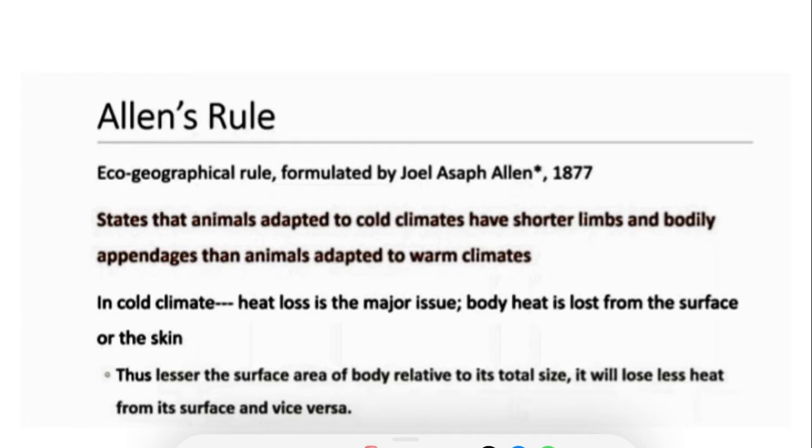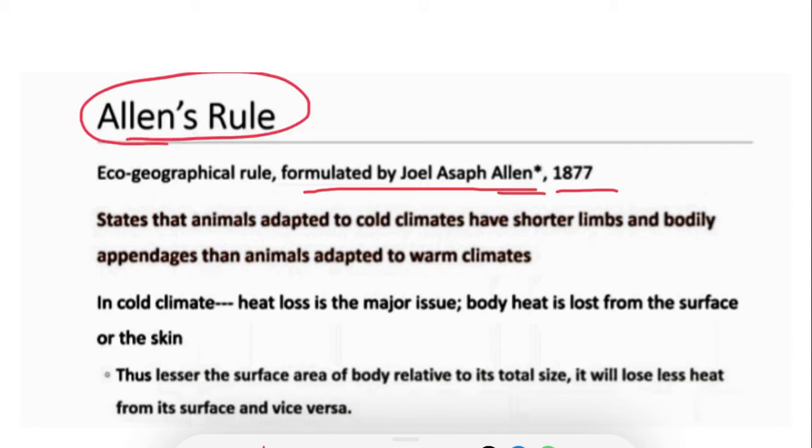So what does Allen's Rule state? Allen's Rule states that endothermic animals present in colder climates have shorter limbs and appendages — like ears and nose — compared to their close relatives present in warmer climates. Allen's Rule is an eco-geographical rule and was formulated by Joel Asaph Allen in the year 1877.